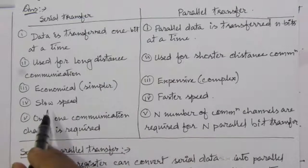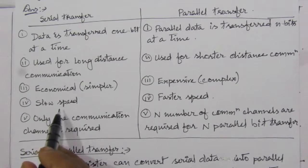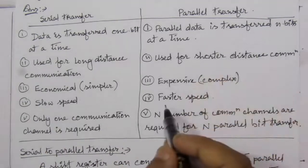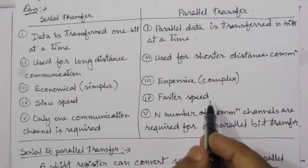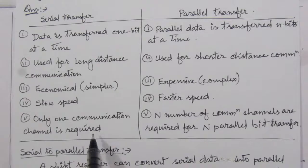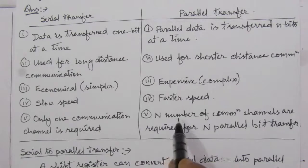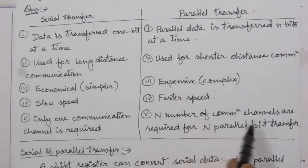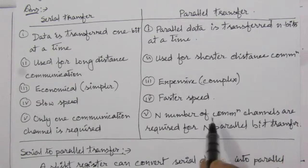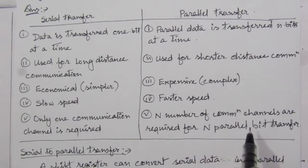The fourth difference: in serial transfer, one bit is transferred at a time, so it has slow speed. In parallel transfer, n bits are transferred at a time, so it has faster speed. The fifth difference: only one communication channel is required for serial transfer. For parallel transfer, n number of communication channels are required — depending on the number of bits transferred parallelly, that many channels are needed.